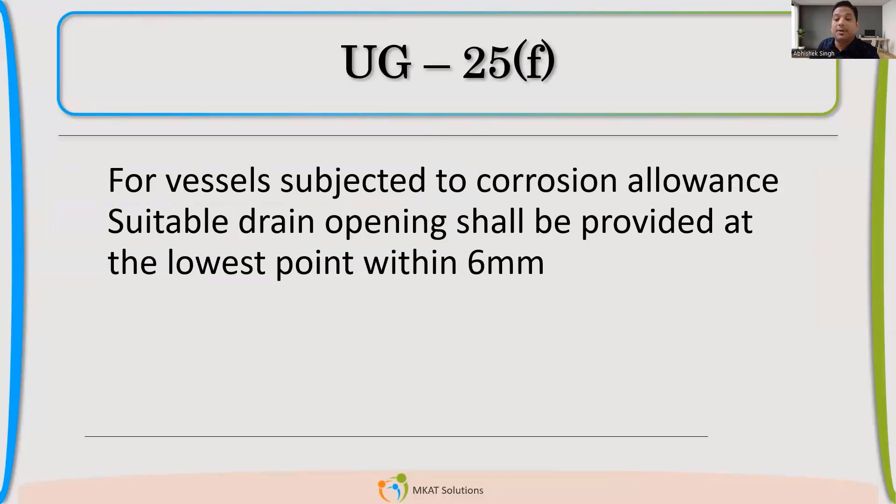There is one more point about drain. So as a design engineer, we have to always remember that at the lowest point of that pressure vessel, we need to have a drain, a nozzle for draining. So always at the lowest point, like that is the reason we sometimes we keep a little slope for that pressure vessel. So wherever the lowest point is, we'll drill a hole and connect it with a nozzle. So always we should provide a drain and that should be at the lowest part of that pressure vessel.